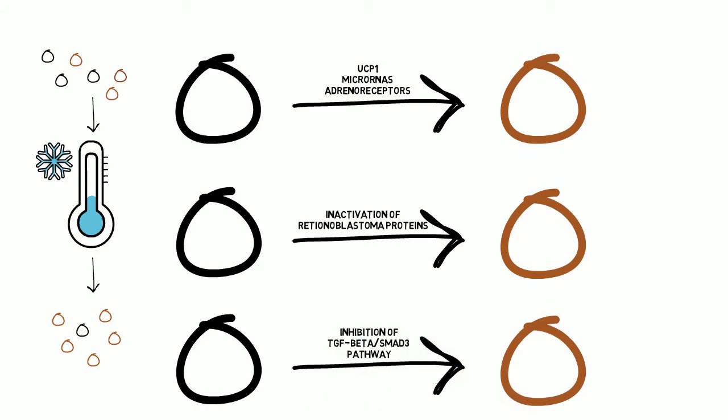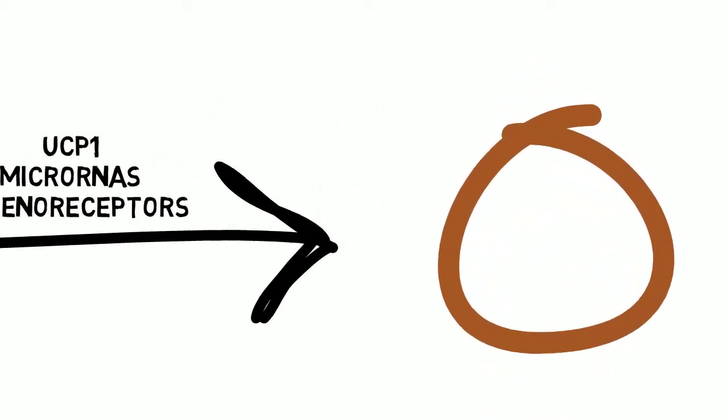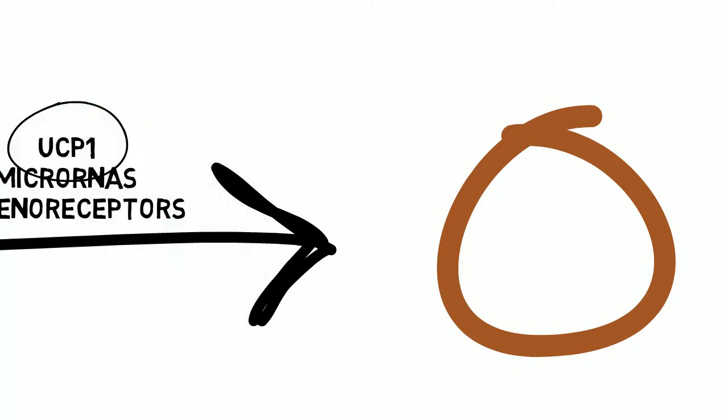Despite this, there is no one definitive molecular switch that causes a conversion. However, the upregulation of UCP1 seems to have a primary role in the transdifferentiation process. As it is expressed in mitochondria, which are more prevalent in brown adipocytes as these are the cells responsible for energy production.